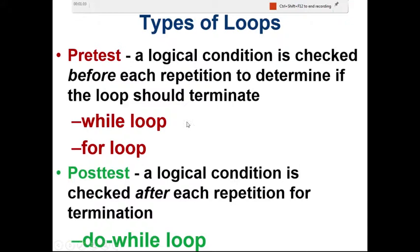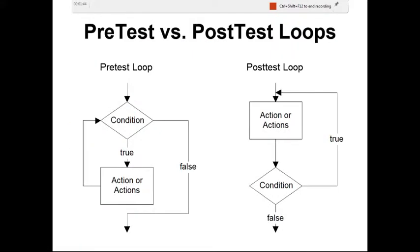The three loops are: while loop, for loop, and do-while loop. The while loop and for loop are pre-test loops — shown in red — meaning the logical condition is checked before each repetition to determine if the loop should terminate. The do-while loop is a post-test loop, where the condition is checked after each repetition.